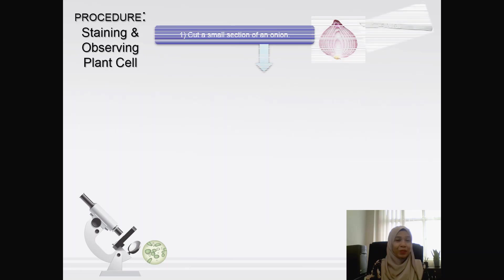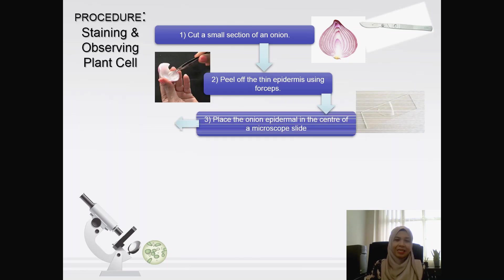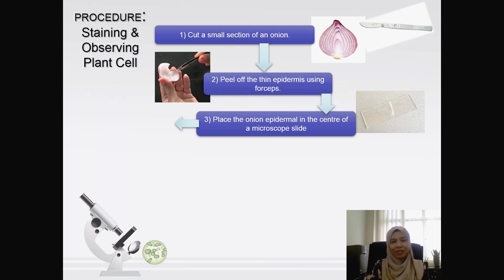Now for the procedure in staining and observing the plant cells. First, you need to cut a small section of an onion and then peel off the thin epidermis using a forcep.